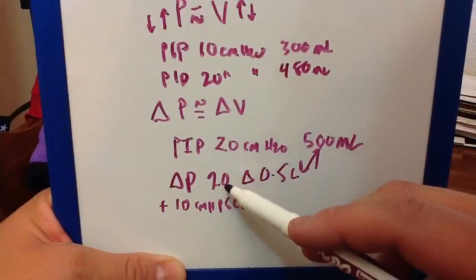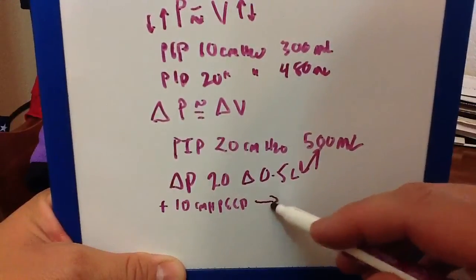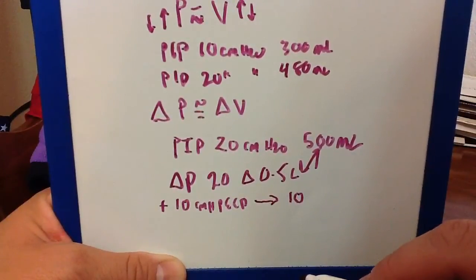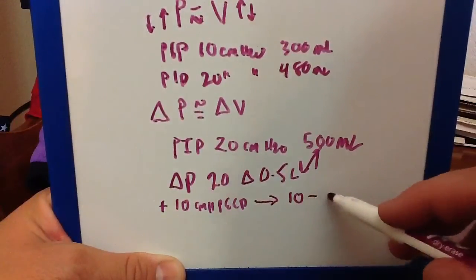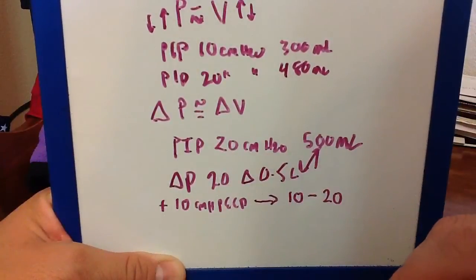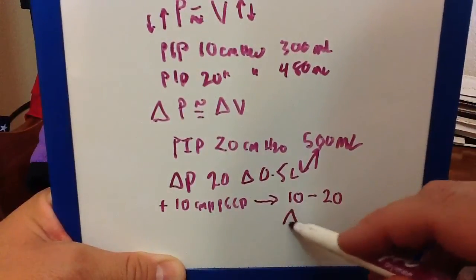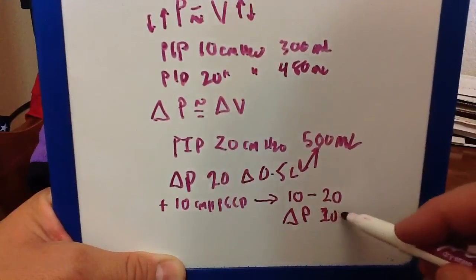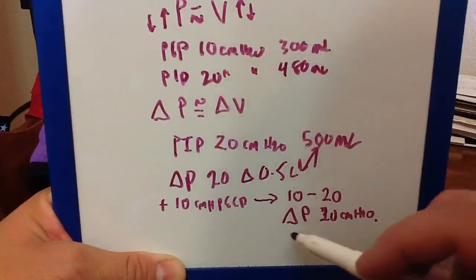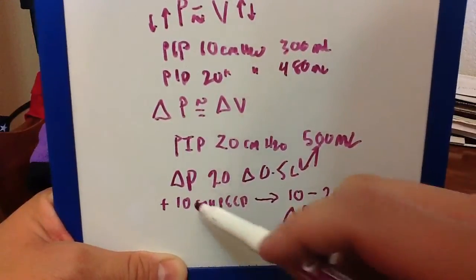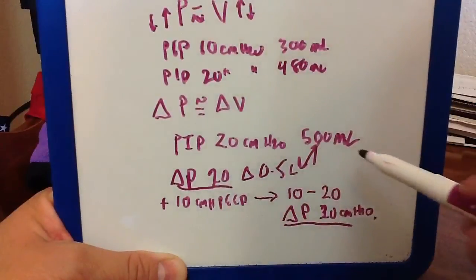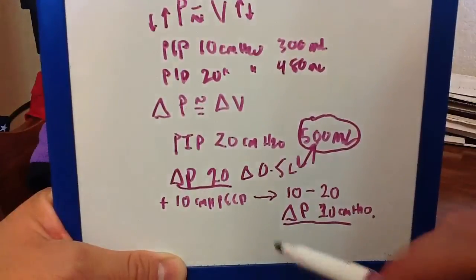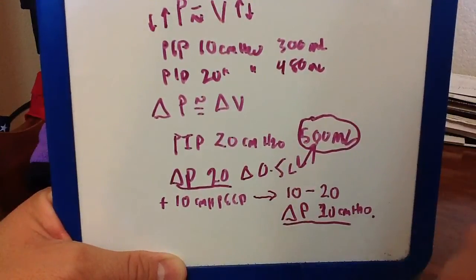My delta P is no longer 20, right? Because with 10 of PEEP, I'm starting at 10. I'm not starting at zero anymore. I'm starting at 10 and going to 20. So my delta P in this case, my change in pressure, is in fact 10 centimeters of water. My delta P is half of what my original delta P is. In this case, I would definitely expect the volume to decrease because my delta P has decreased.